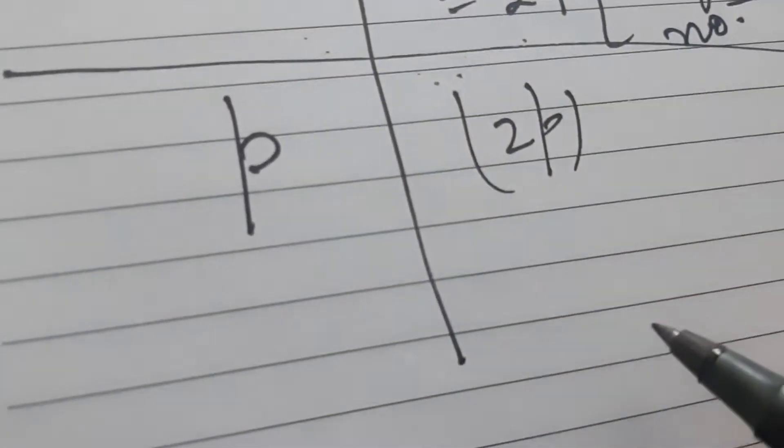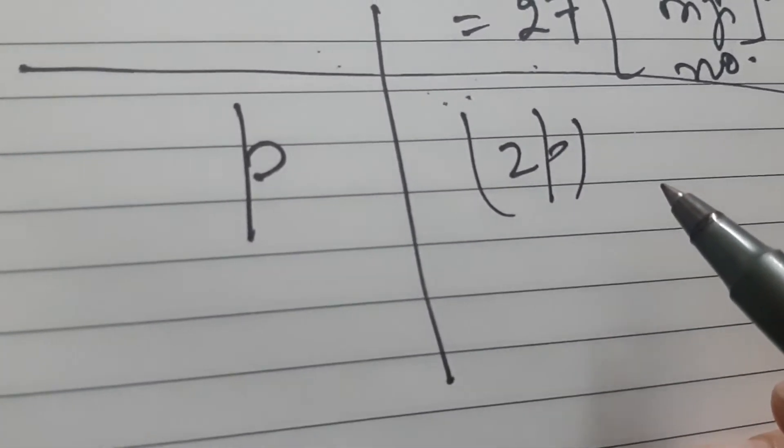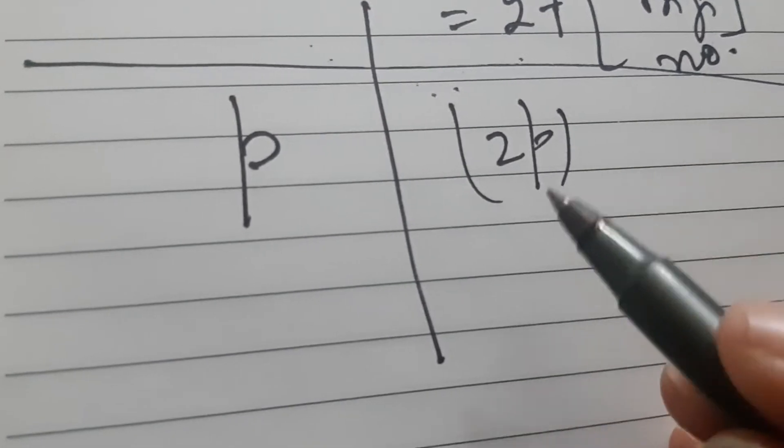Now you tell me, if I begin with the number p and it is doubled, it becomes 2p. So what will be the relation between the original number and the cube of the number when it is doubled?